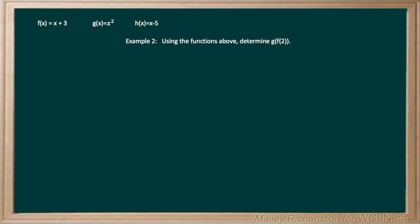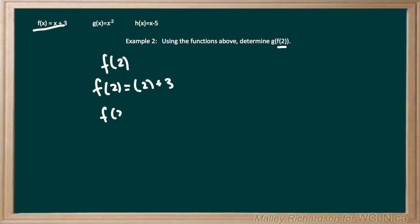Example 2 asks us to use the following functions to determine g of f of 2. This is basically the same question except reversed. We find the innermost function, f of 2, using f of x equals x plus 3. Replacing x with 2, we get f of 2 equals 2 plus 3, which is 5.